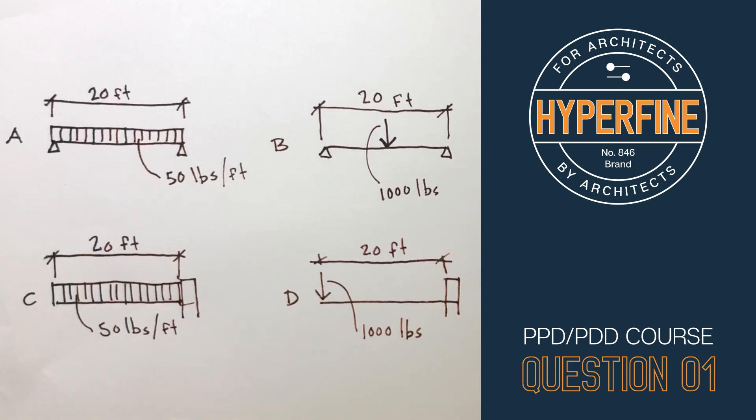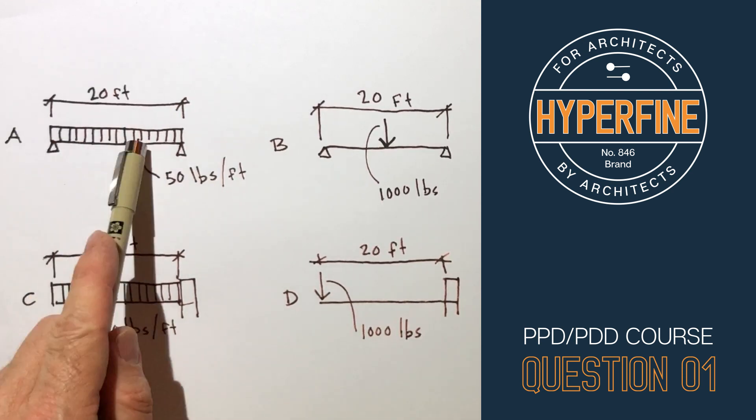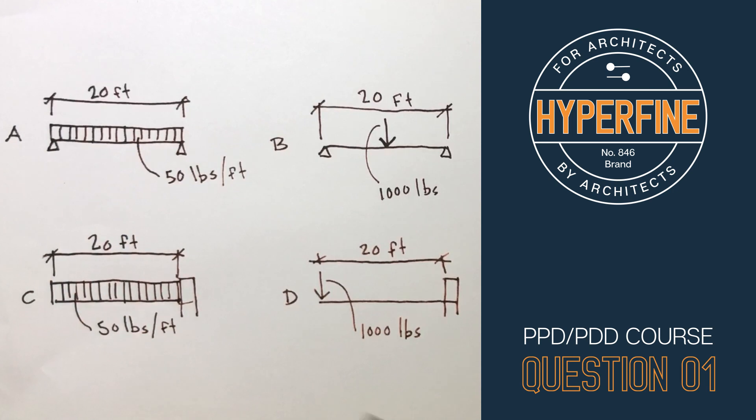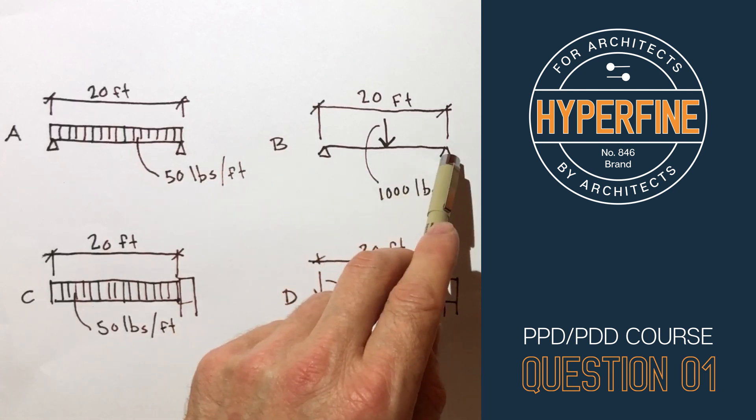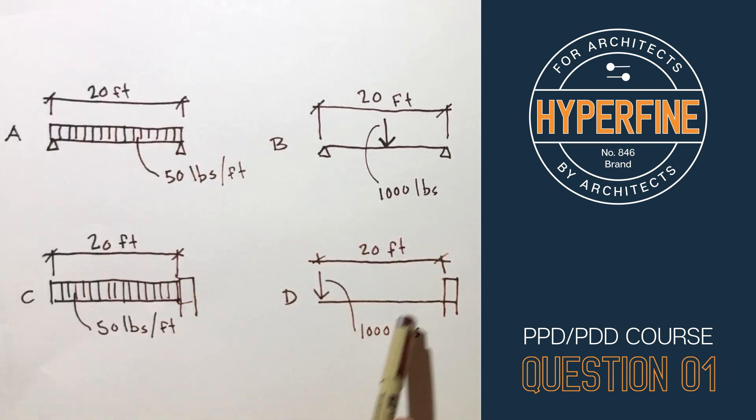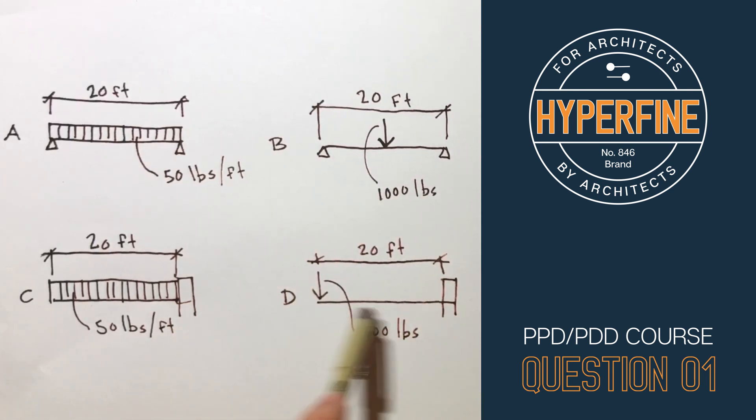This is from question one and this is about bending moments. You've got four typical loading conditions here that you might be asked about or might see on the exam. You've got a uniformly distributed load with supports at each end, a uniformly distributed load on a cantilever, a point load mid-span supported at each end, and a point load at the end of a long cantilever.